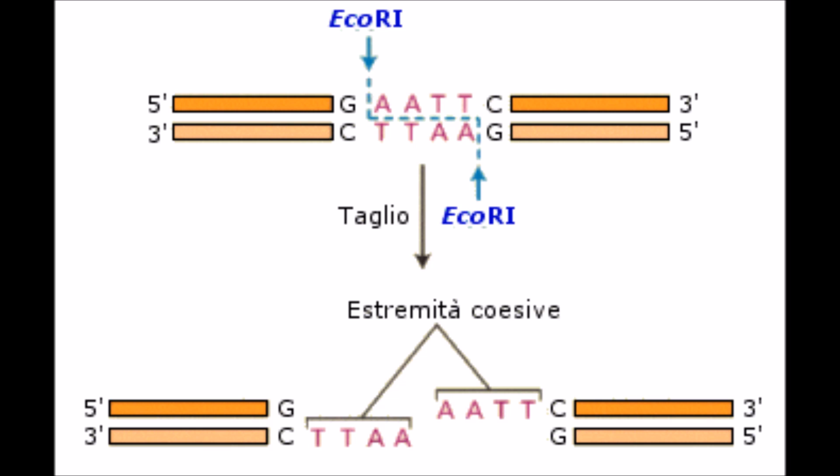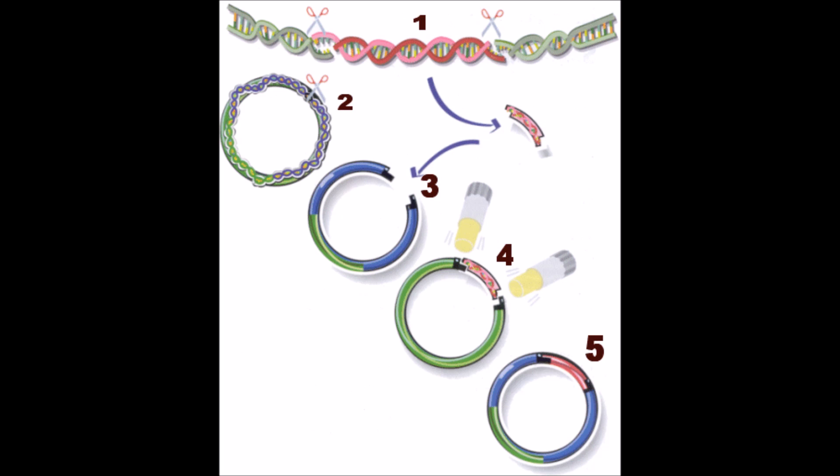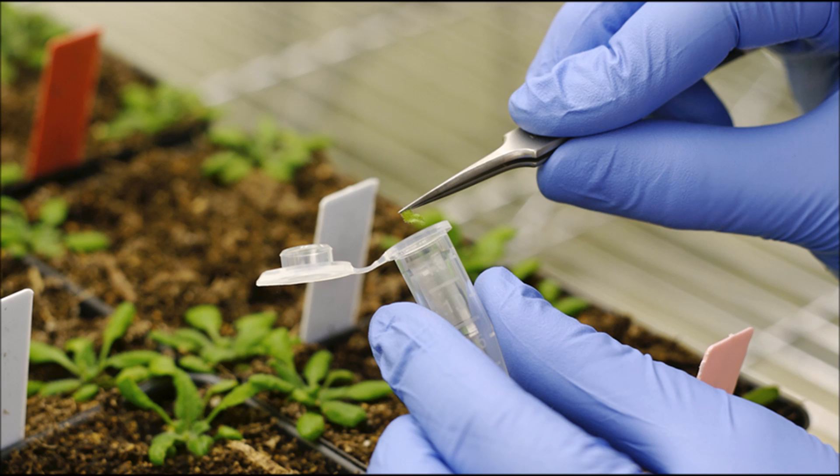The second: restriction enzymes cut the DNA at specific target sequences. The third: DNA ligase is used to join the DNA. In this way, you obtain the recombinant DNA. The fourth: it is necessary to have a DNA sequence that regulates the expression of the gene. This sequence is called a promoter.